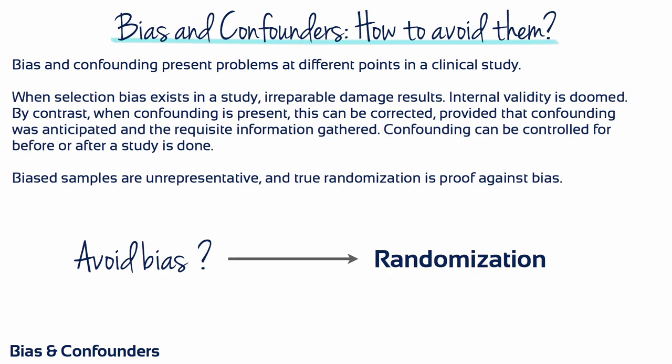The potential for bias does not mean that bias is actually present in a particular study, or, if present, would have a big enough effect on the results to matter. For a researcher or reader to deal effectively with bias, it's first necessary to know where and how to look for it, and what can be done about it. But one should not stop there. It's necessary to determine whether bias is actually present and how large it is likely to be, and then decide whether it's important enough to change the conclusions of the study in a clinically meaningful way.